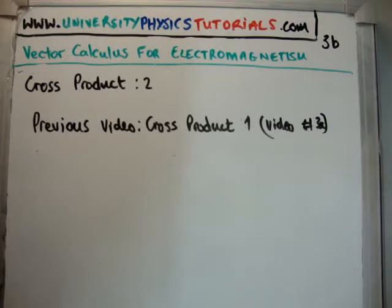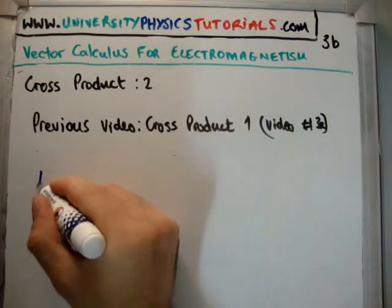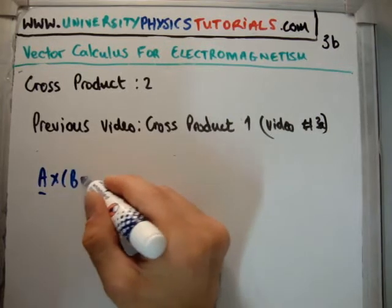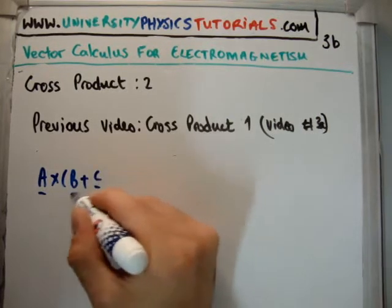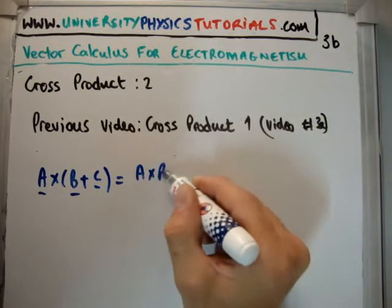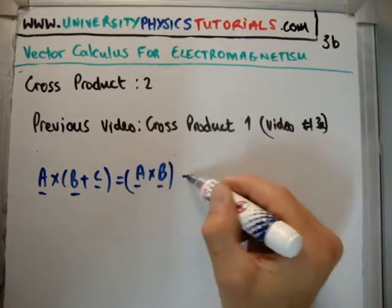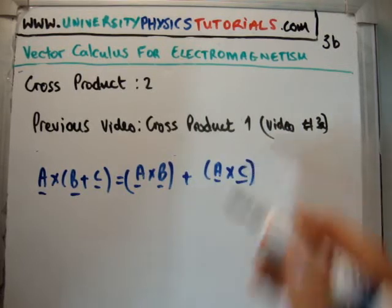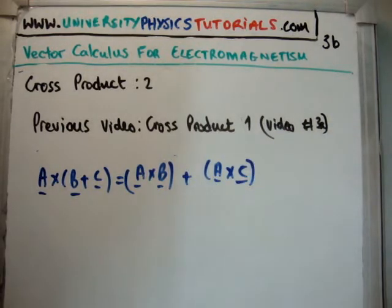So the cross product is distributive. That means that A cross B plus C is distributive, so that means it's going to be A cross B plus A cross C. It's distributive. However, it is not associative. That is one of the properties of the cross product. Sorry, not, it's not commutative. So it is distributive.